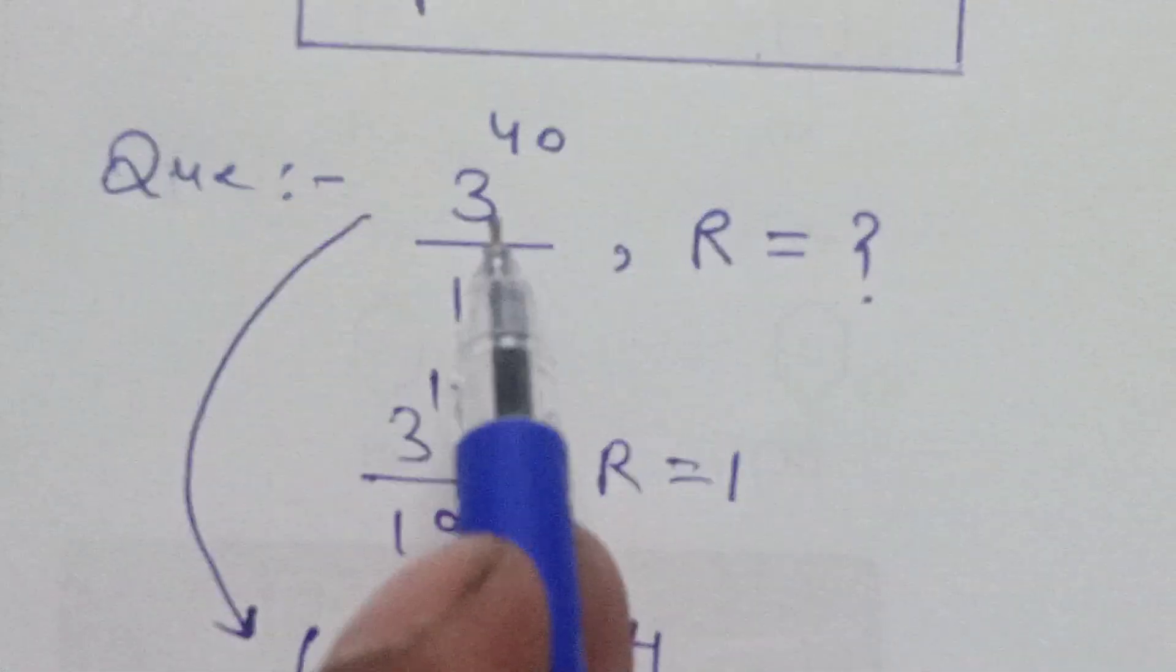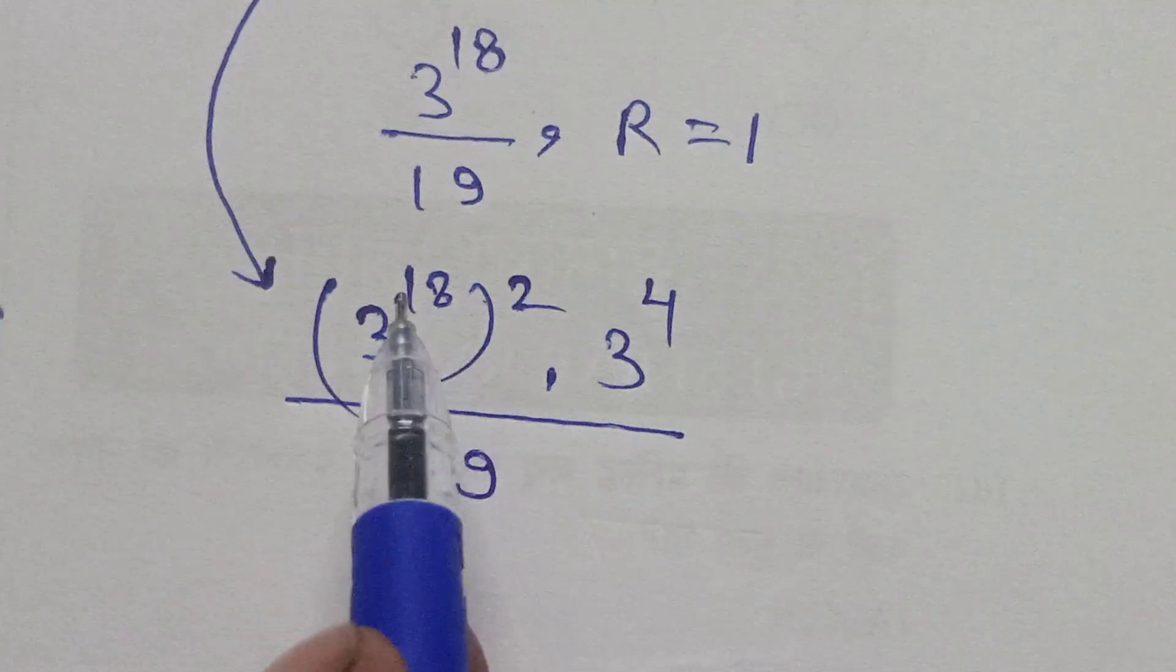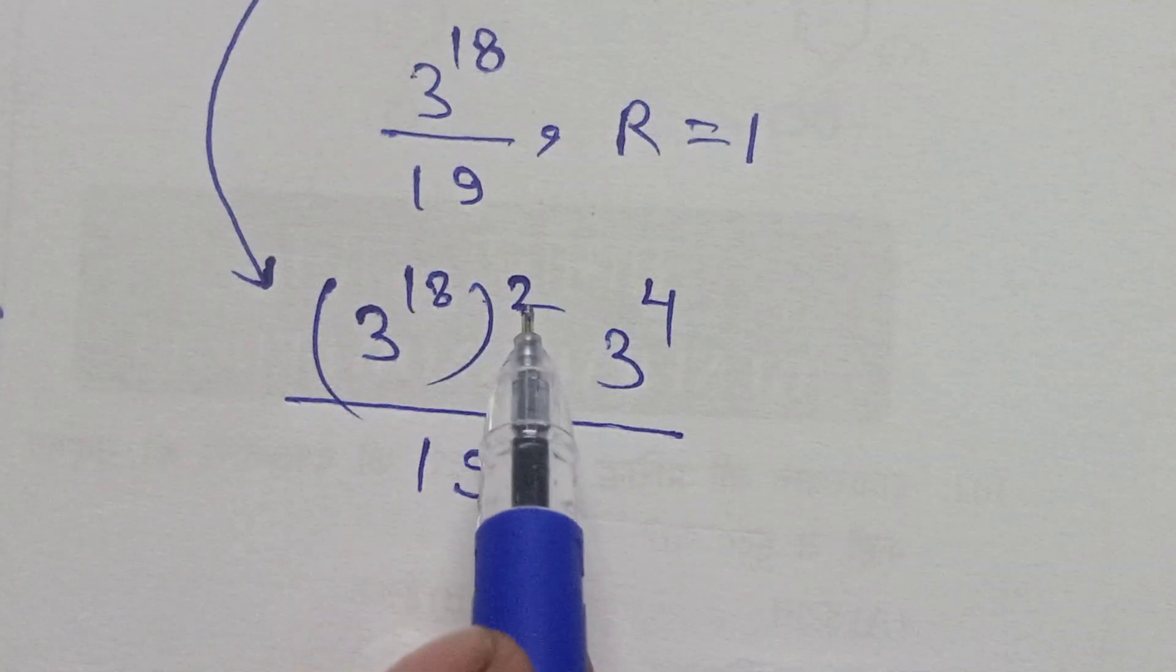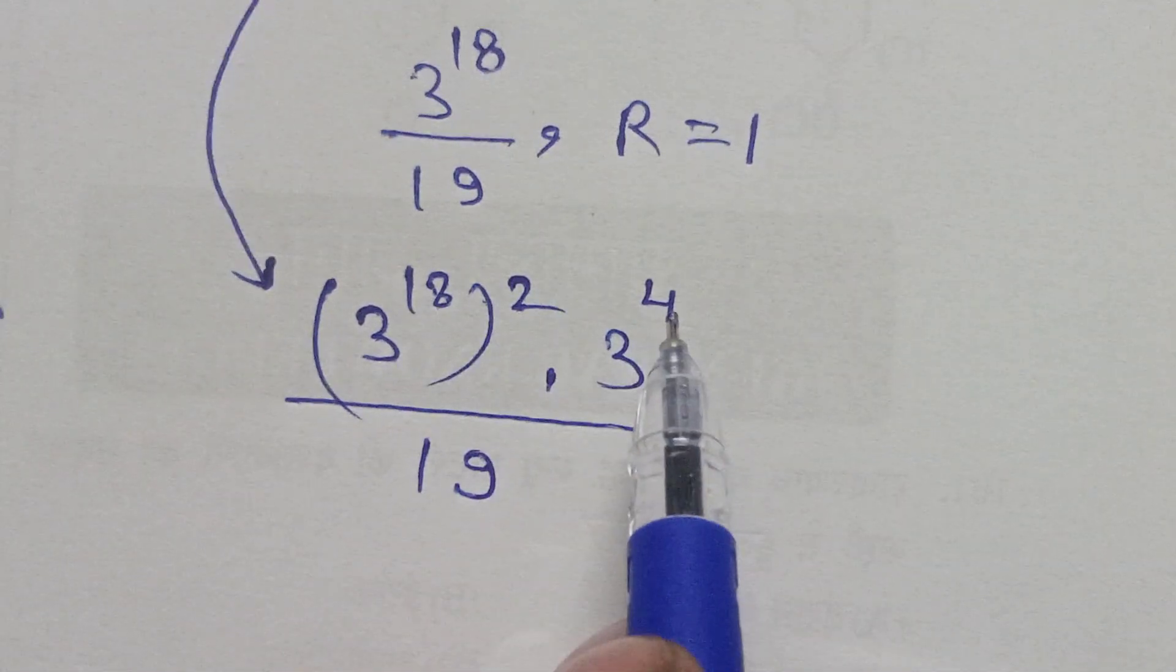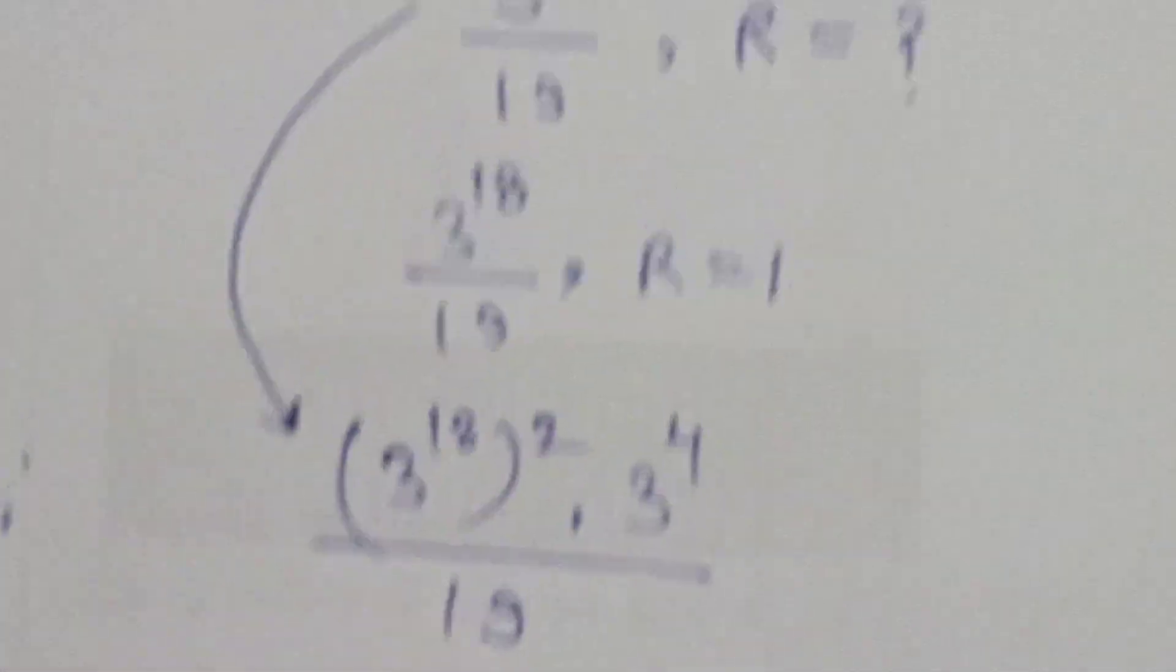3 to the power 40, and 40 can be written in the form 18 times 2 and 4, which equals 40. So the question is in the form...